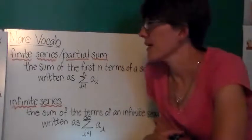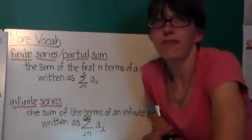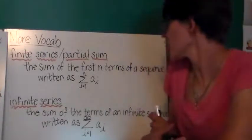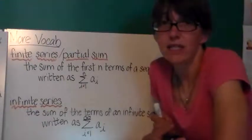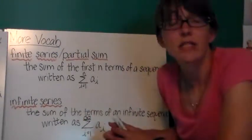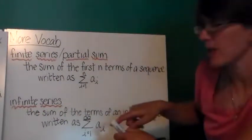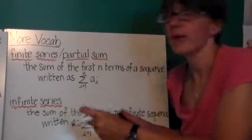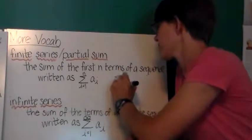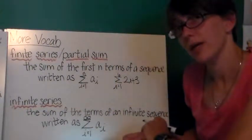I also want you to get this exciting vocabulary written into your notes. There's two different types of series that we could deal with. The first of these is called a finite series or a partial sum. The sum of the first n terms of a sequence is a finite series. It has an end. It's also called a partial sum if this sequence could go on forever. You can see that this is a finite series because it would have a numeral n up here at the top. An example would be the one that we just did - sum as i goes from 1 to 6 of 2i plus 3.